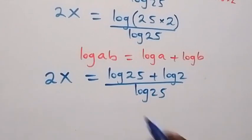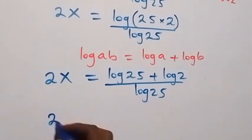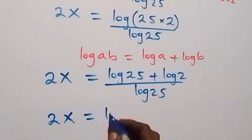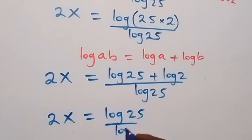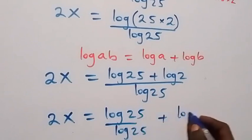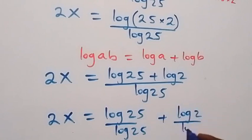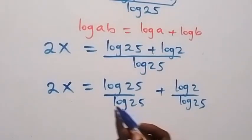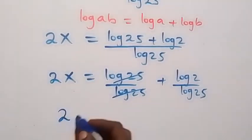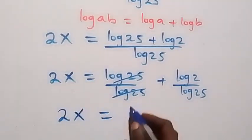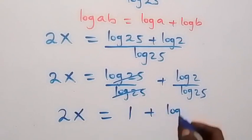This implies that 2x now equals to log 25 plus log 2, all over log 25. We can separate this fraction, so this becomes 2x equals to log 25 over log 25, plus log 2 over log 25. Log 25 cancels, giving 1, so 2x equals to 1 plus log 2 over log 25.